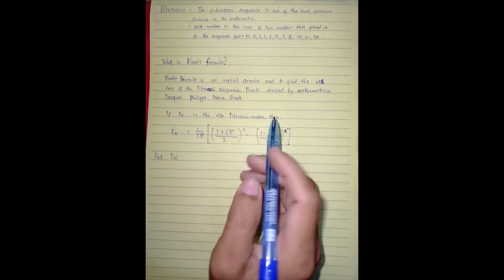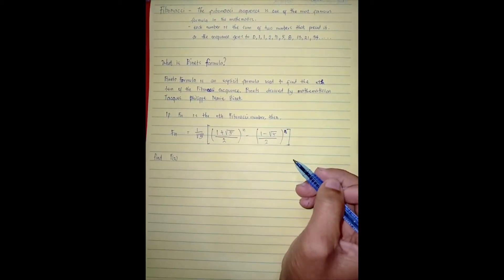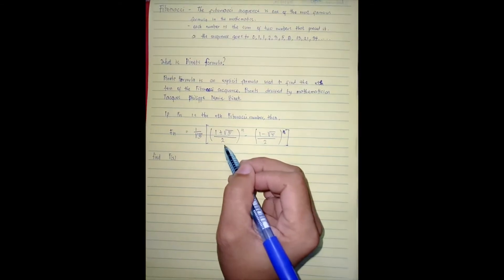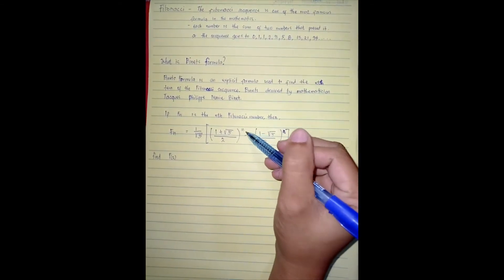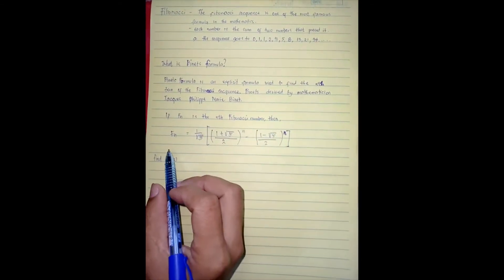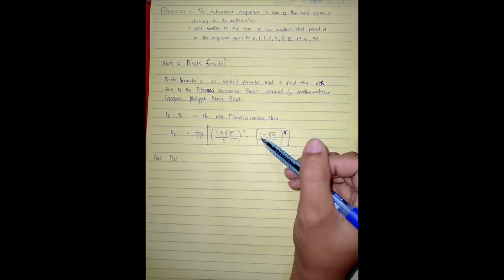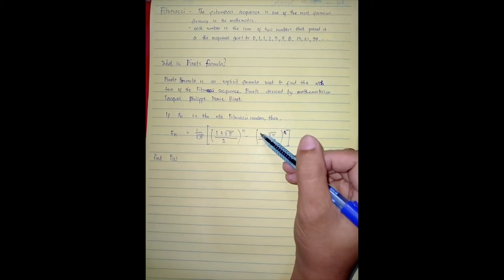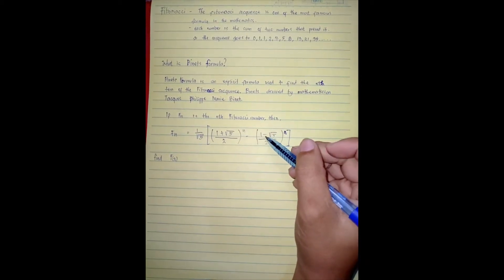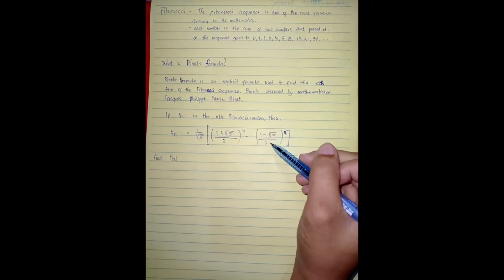Close in the open parenthesis, one plus square root of five over two, or divided by two, raised to n, which is the Fibonacci number na hahanapin natin, so minus, close parenthesis, minus one minus square root of five divided by two.